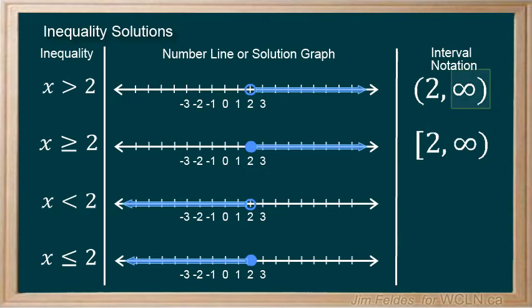When our values extend to infinity, we use the parenthesis since we can't include the final value, there isn't one. Here are the interval notations for the remaining two examples.